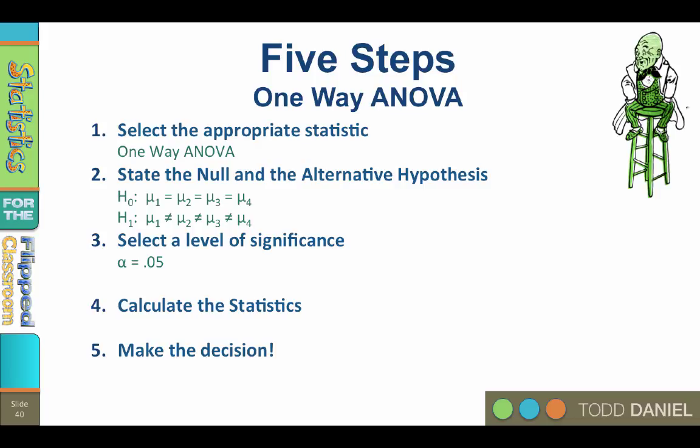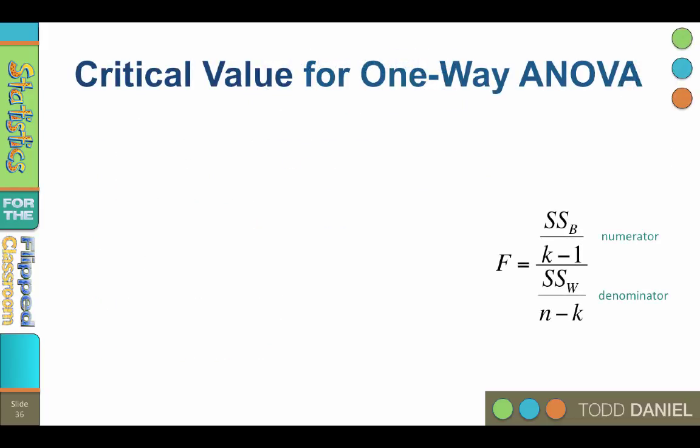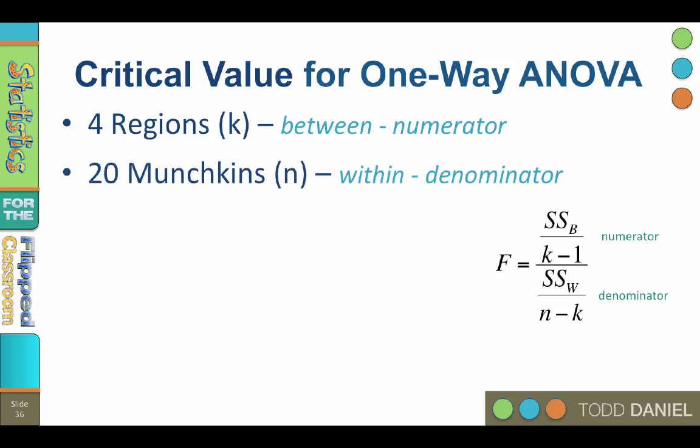What does matter here is the degrees of freedom, so that we can find the critical value. Calculating a critical value for a one-way ANOVA requires knowing the degrees of freedom for the numerator and the denominator of the f-ratio. The degrees of freedom for the numerator is based on the number of categories or levels, k. This is called the degrees of freedom between. The degrees of freedom for the denominator is based on the sample size, n. And this is called the degrees of freedom within.